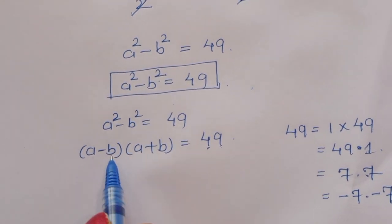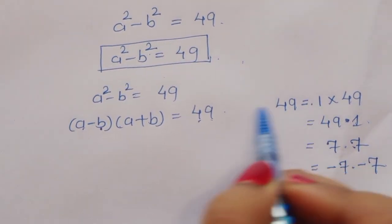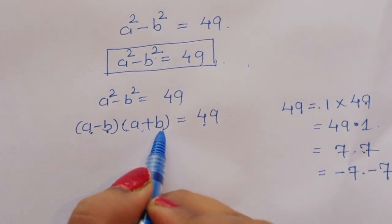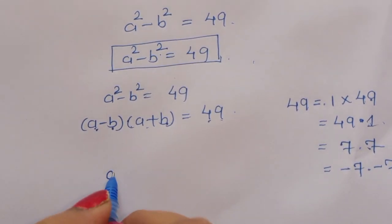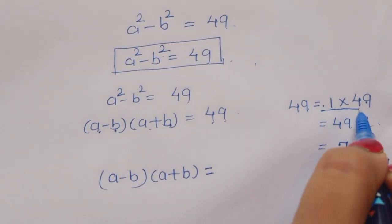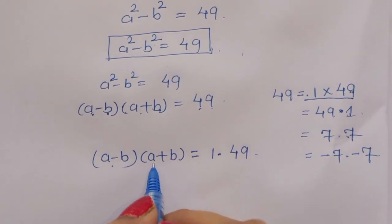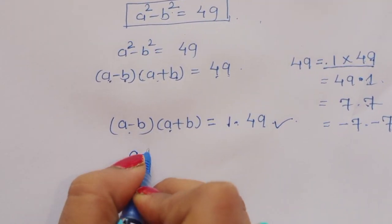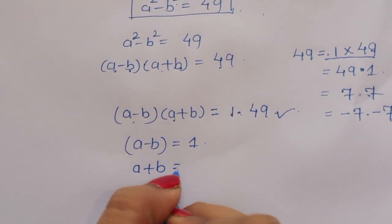Now, (a minus b) times (a plus b). If we consider a minus b is 1 and a plus b is 49, we check that a minus b is less than a plus b here. Since 1 is less than 49, this condition is correct. Therefore, a minus b equals 1 and a plus b equals 49.